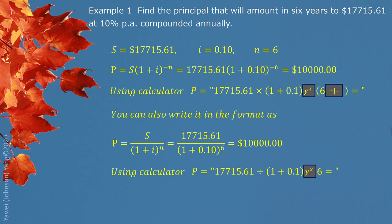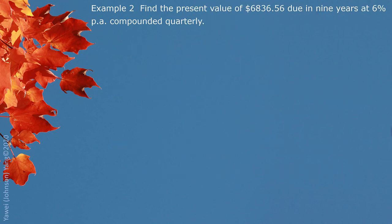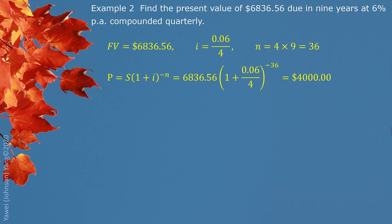Example 2: Find the present value of $6,836.56 due in 9 years at 6% compounded quarterly. The basic information — $6,836.56 is the future value. The periodic interest rate is 6% divided by 4 since interest is compounded quarterly. For 9 years, we count compounding periods by quarter: 4 times 9 gives us 36 quarters. Putting all information into the formula, with the negative exponent since we are looking for present value, the present value is $4,000.